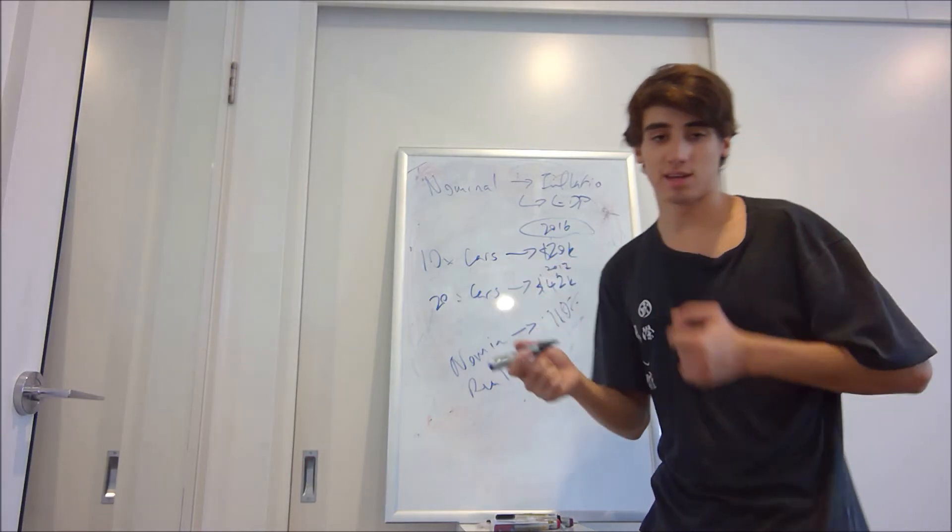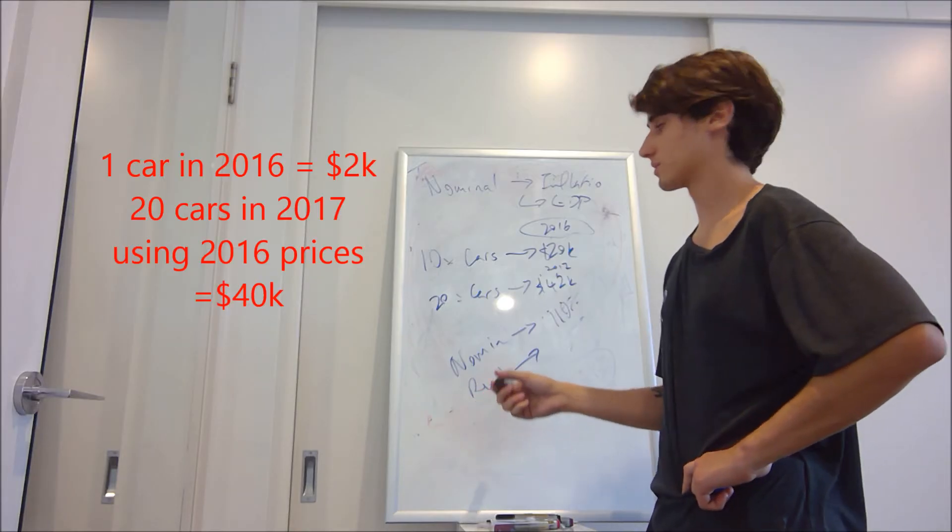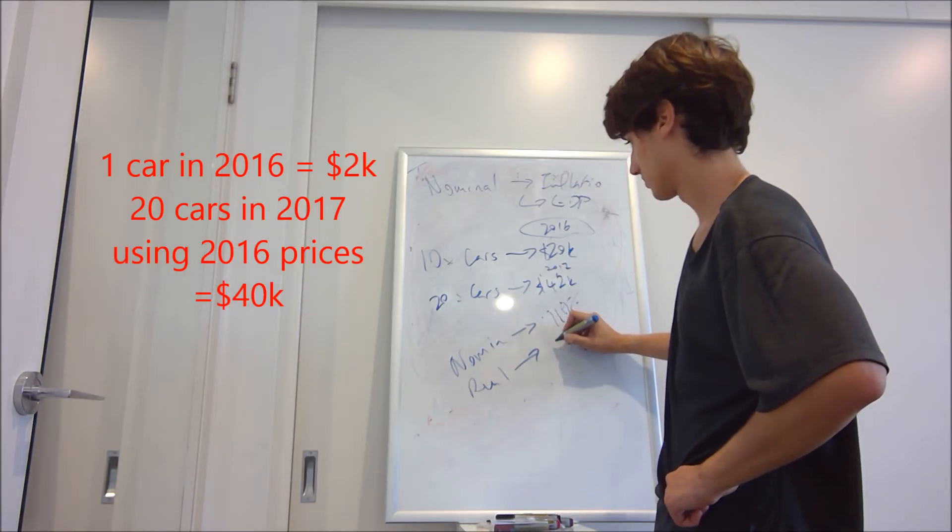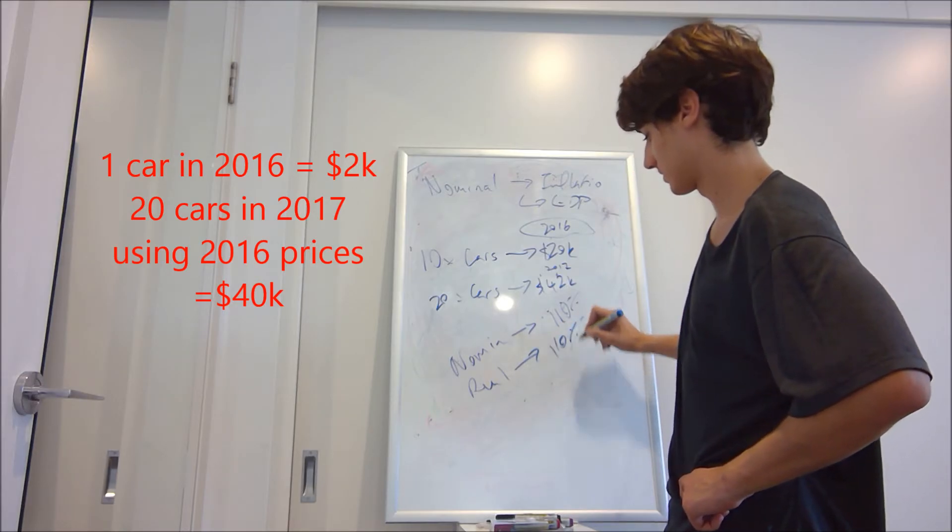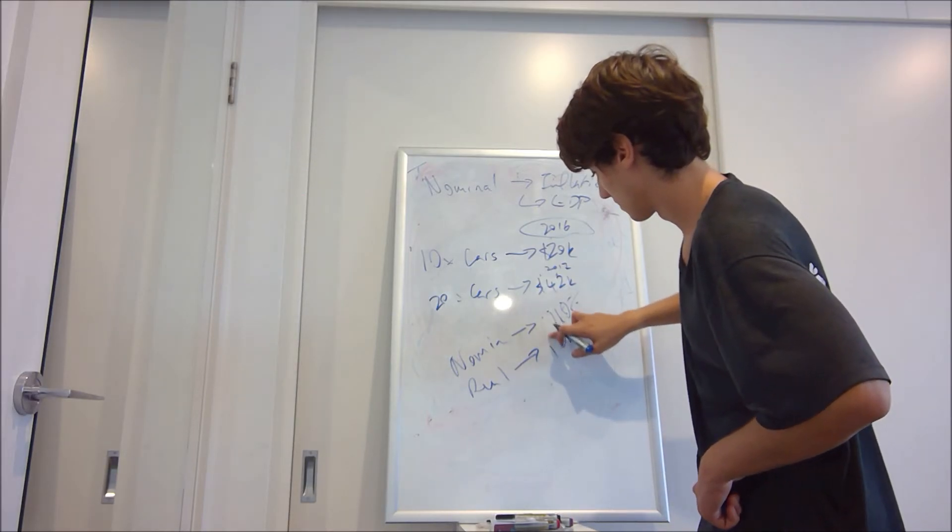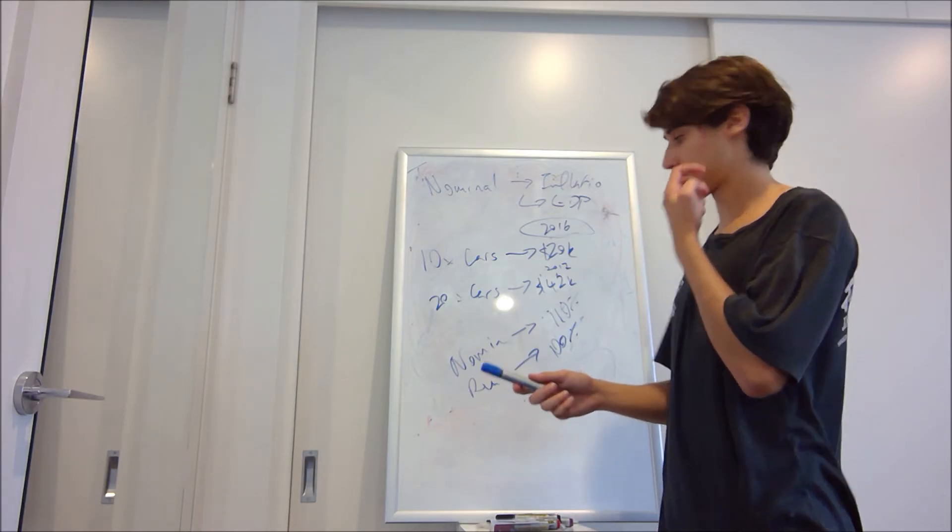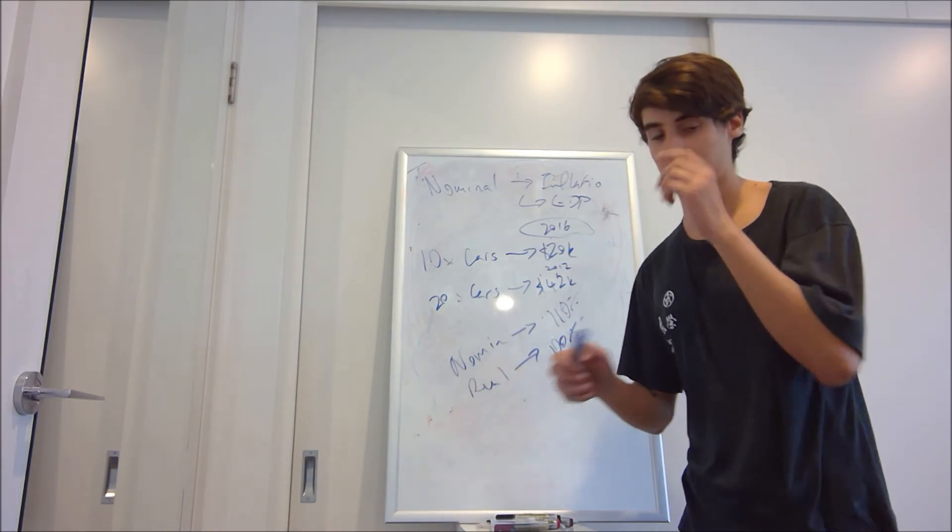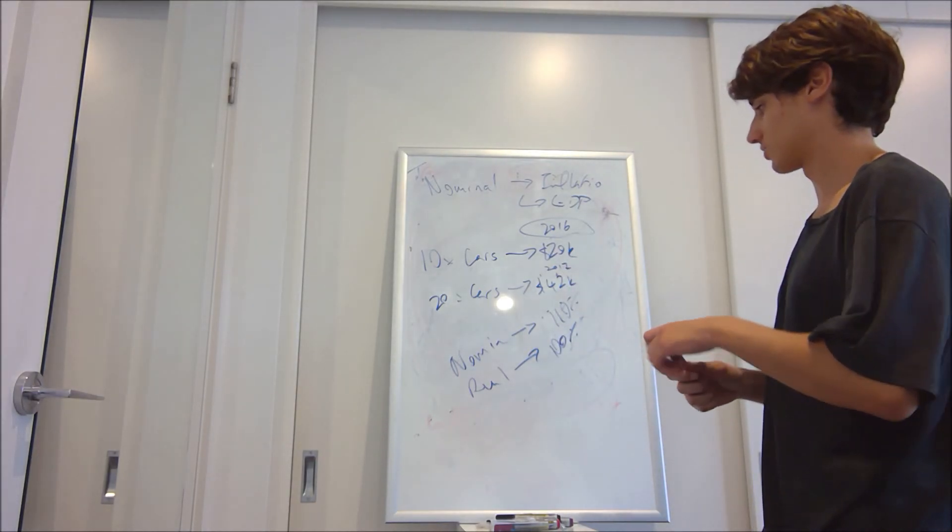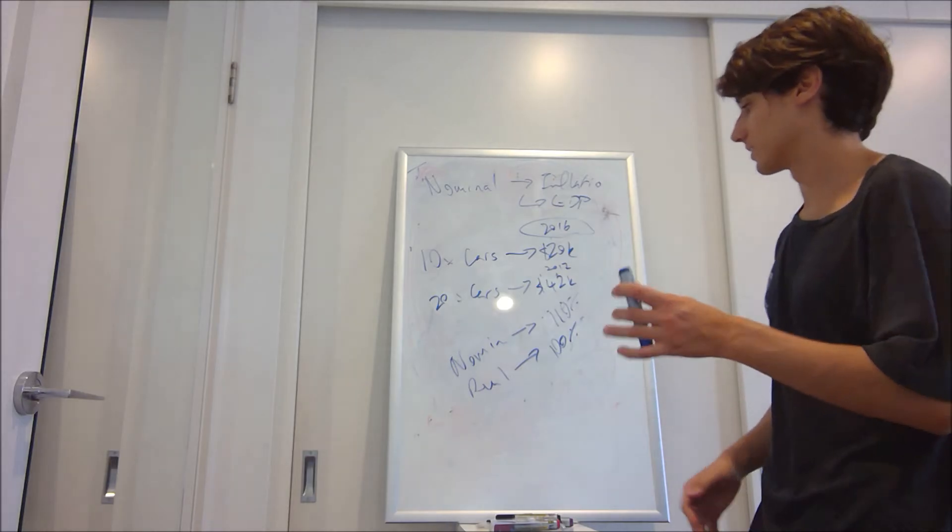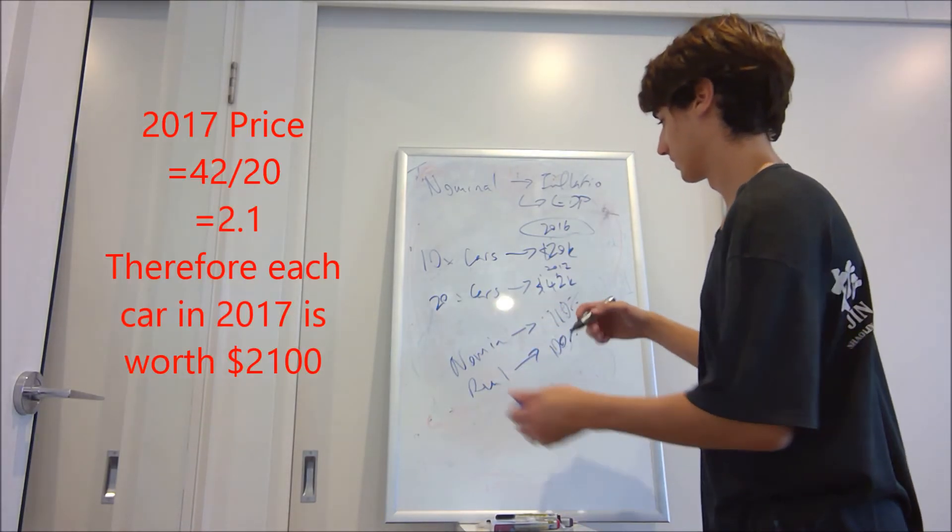So 10 cars worth $20,000, $2,000 per car, that's $40,000. So an increase from $20,000 to $40,000 is a 100% increase. That is in the real GDP. Now if you use 2017 as your base year, the cars are approximately worth $2,100.